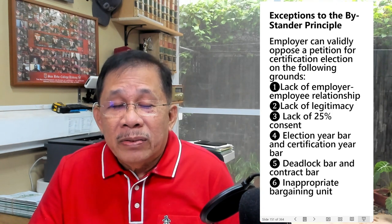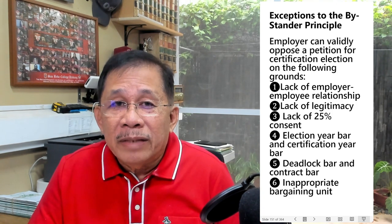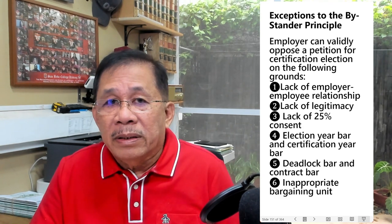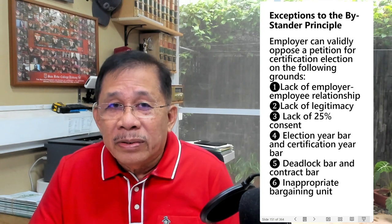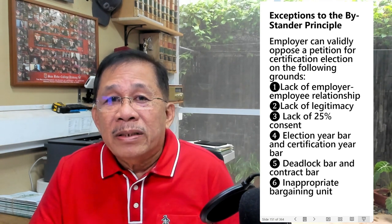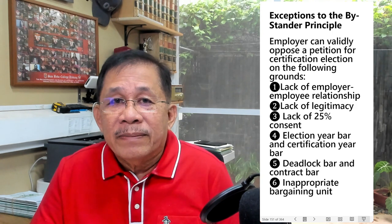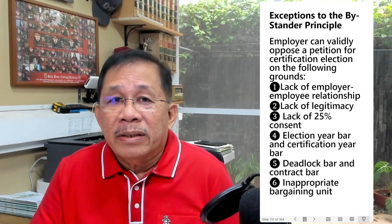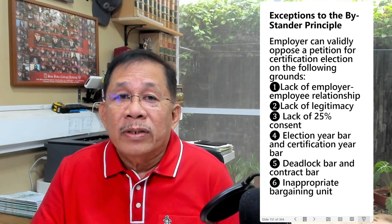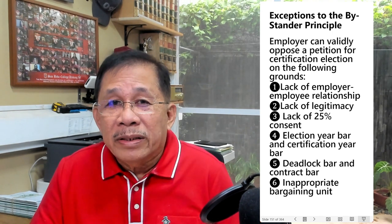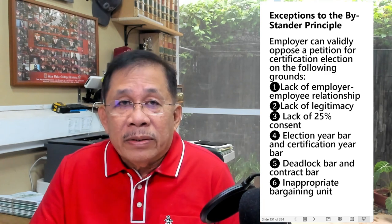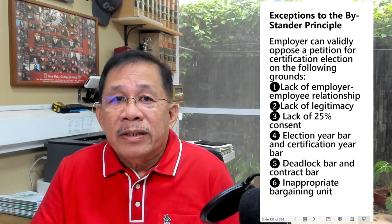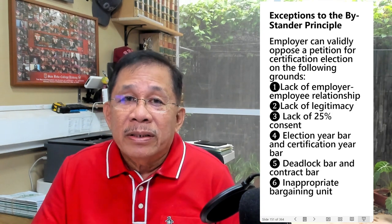Second, an employer can validly oppose a petition for certification election when the petitioning union is not a legitimate labor organization, either because it is not listed in the registry of legitimate labor unions or because its registration has been cancelled with finality. An unregistered union cannot be certified as bargaining agent, and therefore it would be futile to hold a certification election.